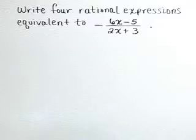Write four rational expressions equivalent to the negative of 6x minus 5 over 2x plus 3.